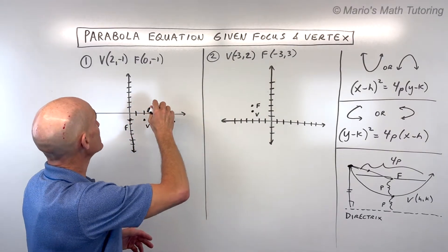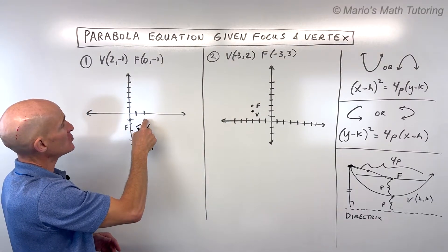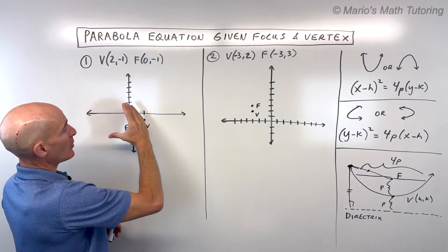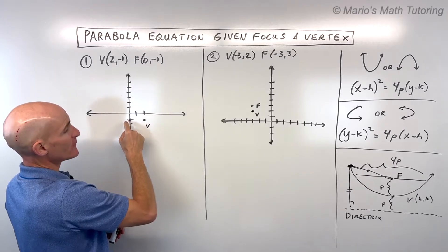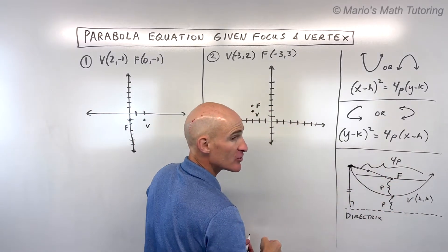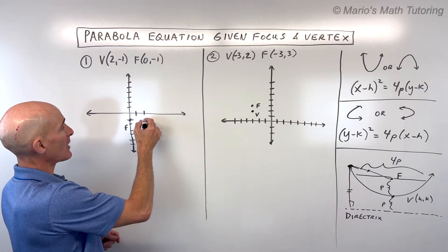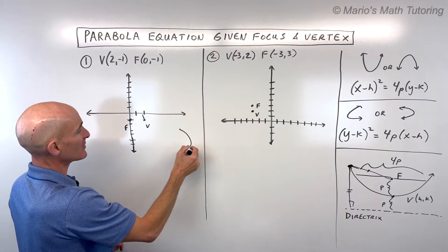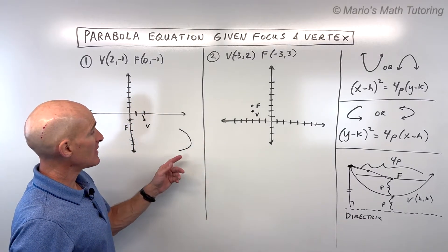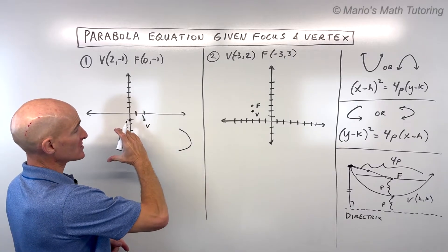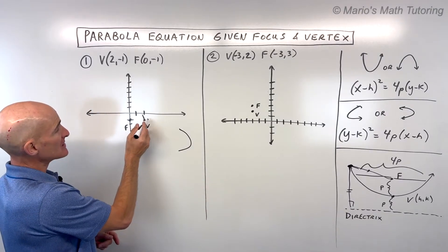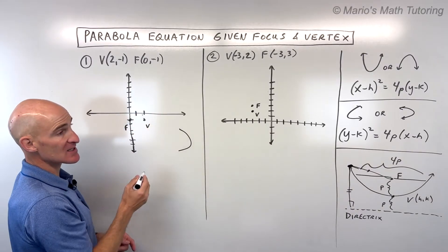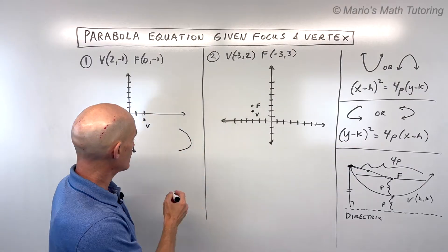What I like to do is draw a little sketch. So if the vertex is at (2, -1) and the focus is at (0, -1), the parabola always opens towards the focus and away from the directrix. In this case, the parabola is going to be opening to the left. That means this is going to be a y-squared type since it opens to the left, and p is the distance from the vertex to the focus, which is 2.